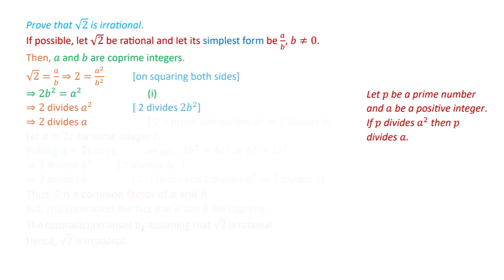Now, if 2 divides a, it means a is an even number. So there exists some integer c such that a equals 2 times c, because a is divisible by 2, meaning a is of the form 2c for some integer c.